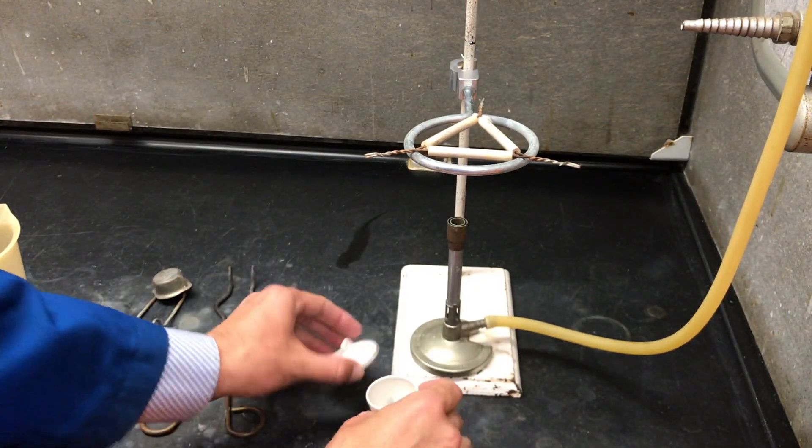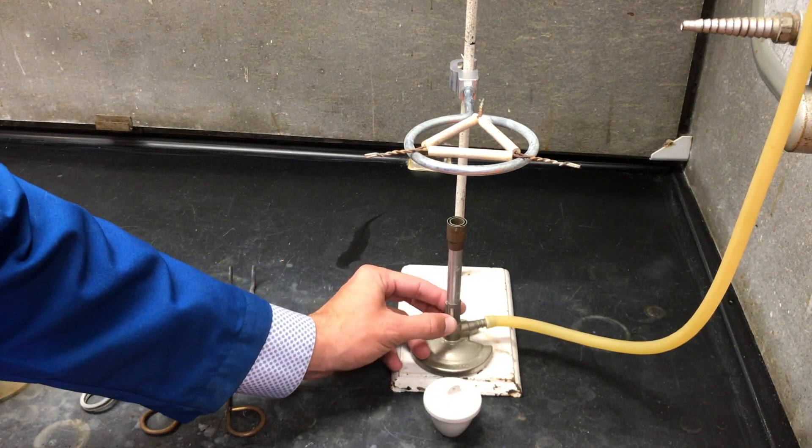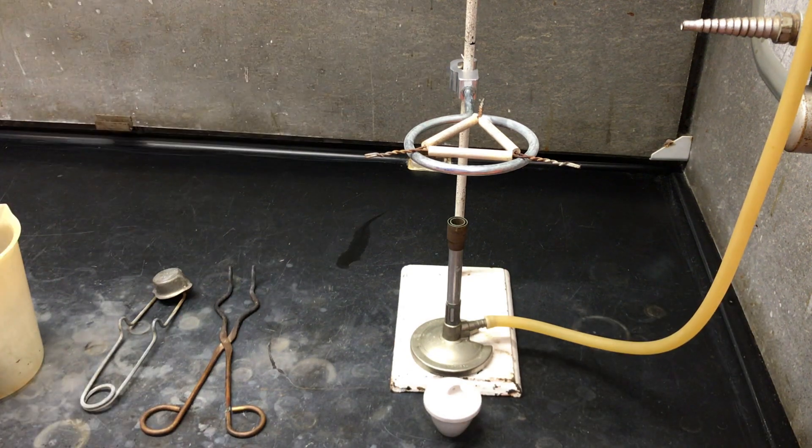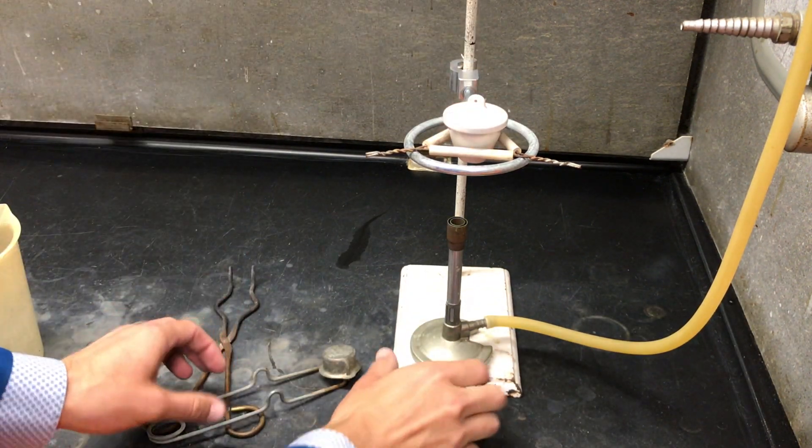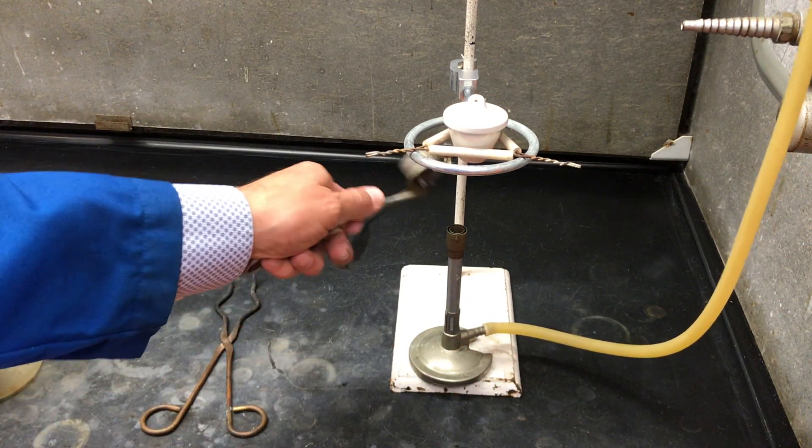Now we'll cover the crucible. Properly light the Bunsen burner as described before and place it on a clay triangle 10 to 15 centimeters from the Bunsen burner and light the Bunsen burner, ensuring that the cone is directly on the crucible.